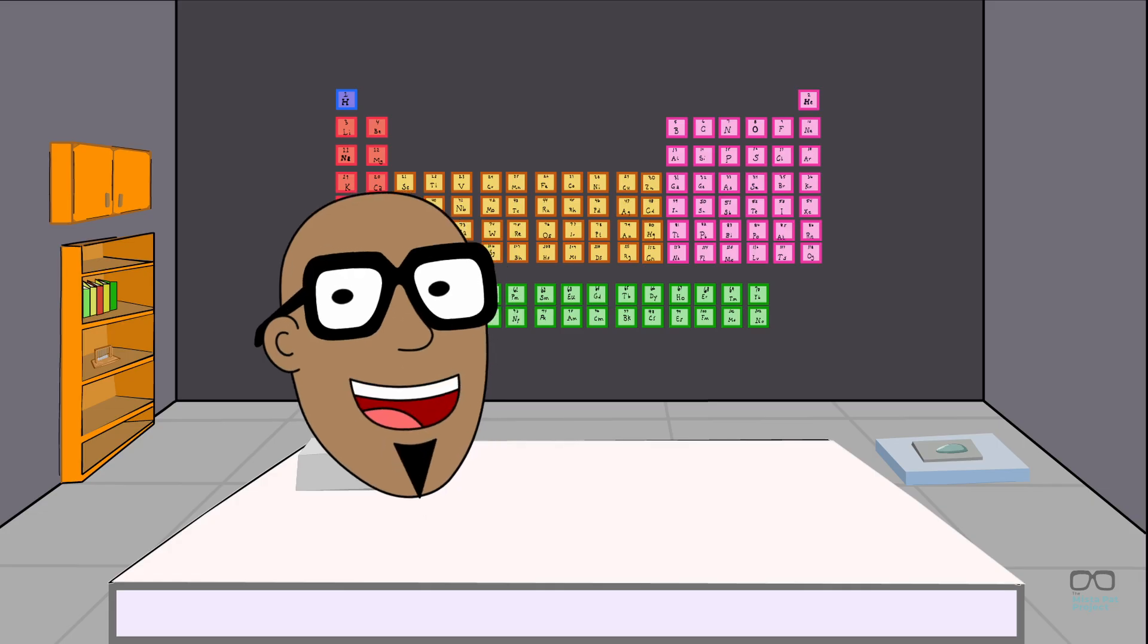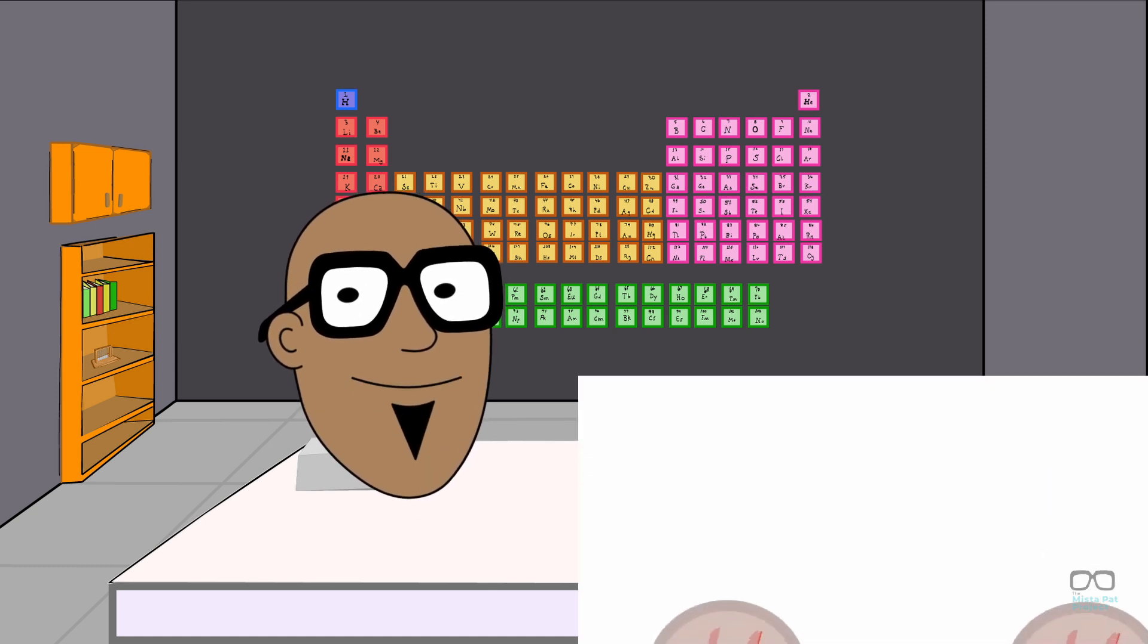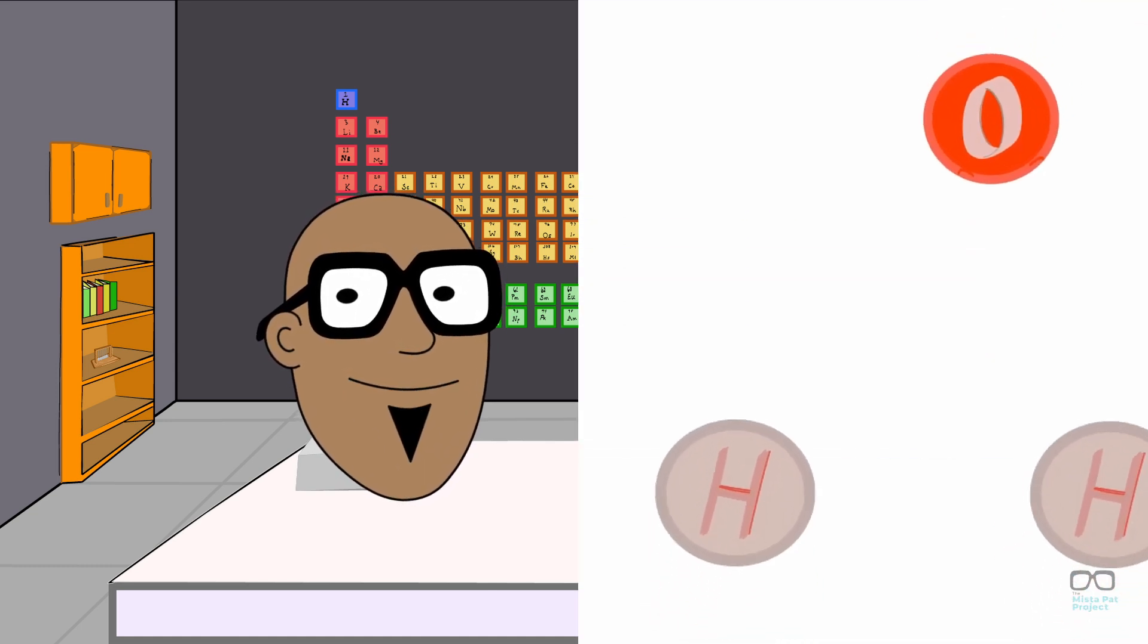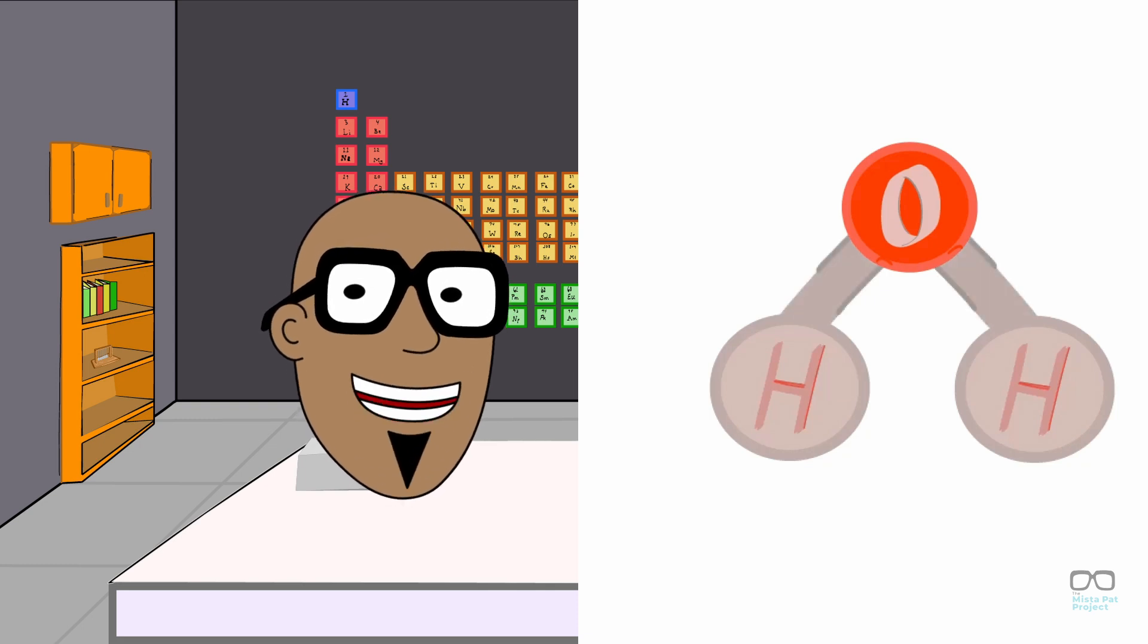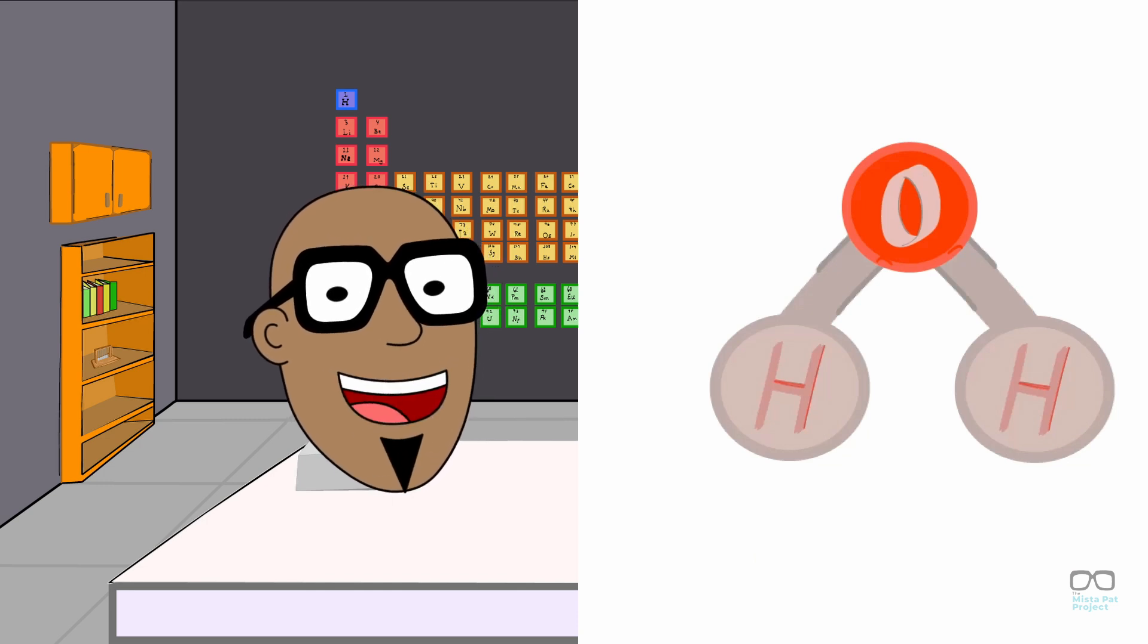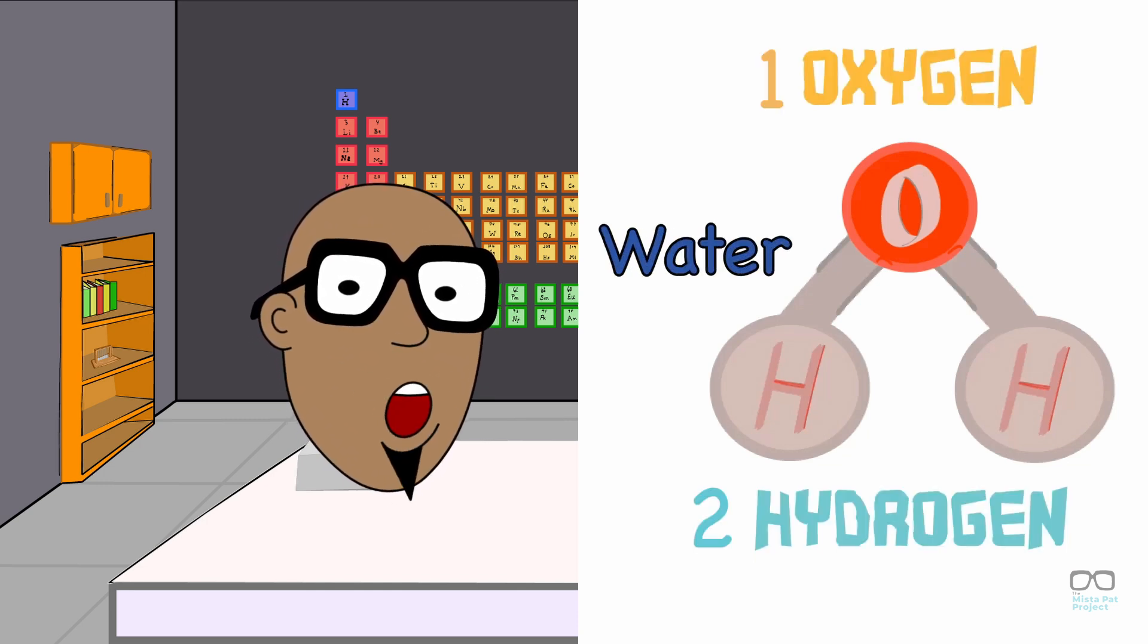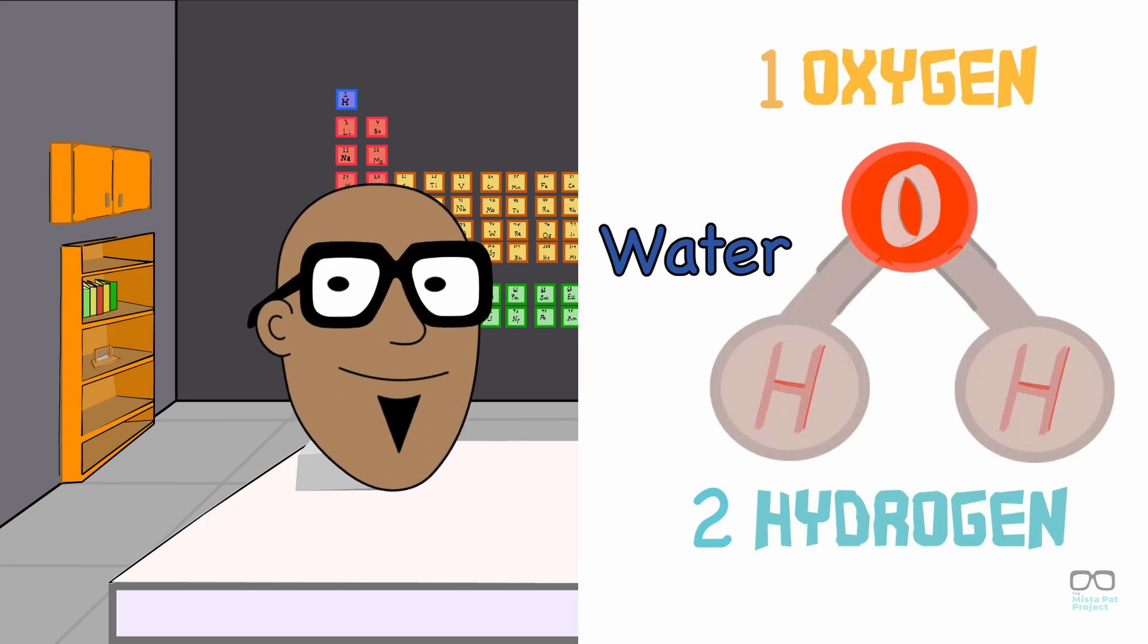Electrons don't always transfer to a different atom, however. Sometimes electrons from two different atoms pair together, causing the atoms to also bond and form a molecule. A molecule is a group of atoms that bond together. One of the most popular molecules is water. Water consists of one oxygen atom and two hydrogen atoms. Now that's a refreshing molecule.